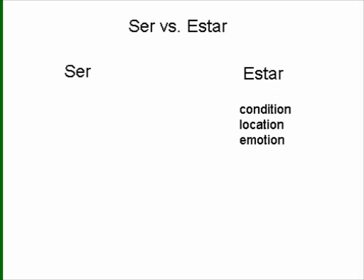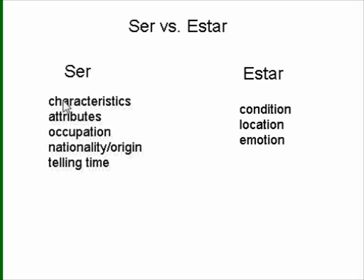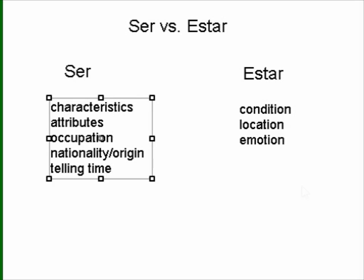So again, a quick recap: estar to talk about condition, location, and emotion. Ser to talk about characteristics, attributes, occupation, nationality and origin, and telling time.